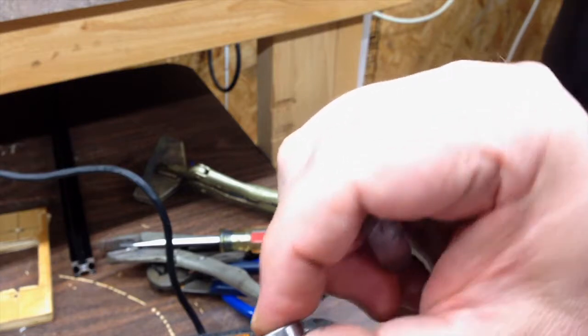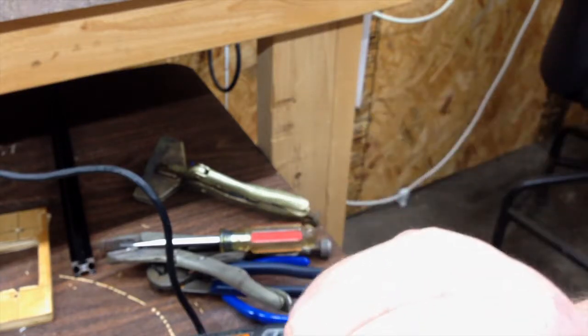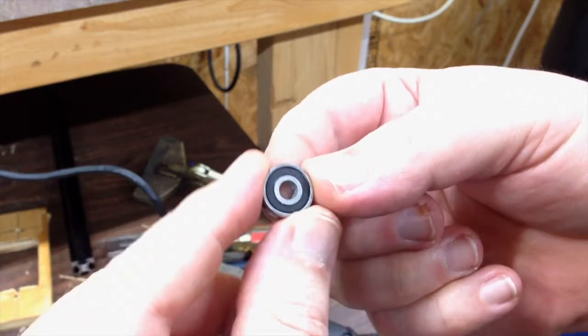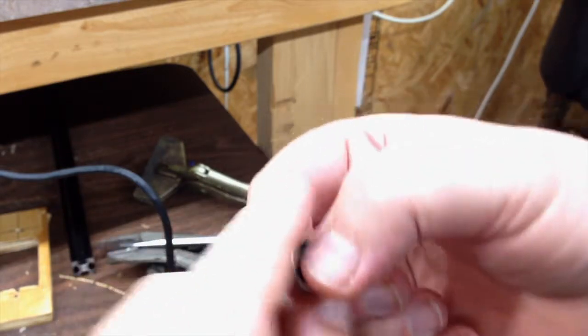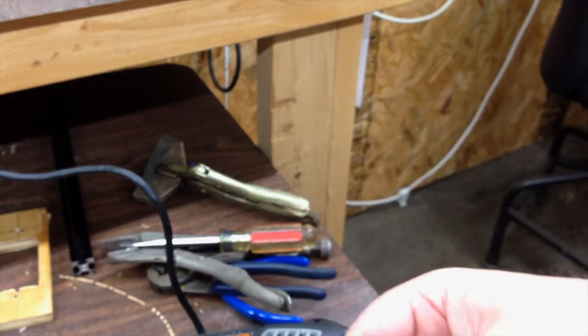Once you get your big sausage fingers in there, that'll pop right out and it still spins. You can see I nicked it a little bit, but I think it's fine. As long as the bearings themselves are still intact and it still spins smoothly, that'll be fine.